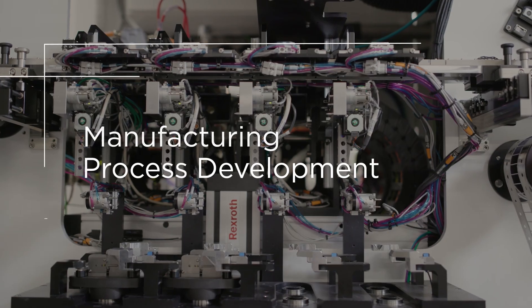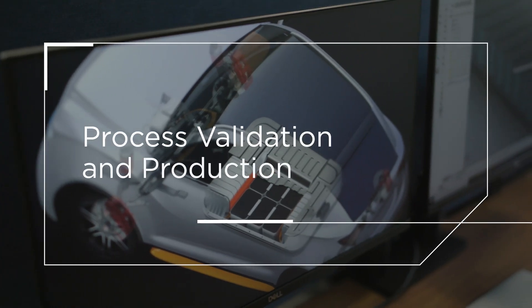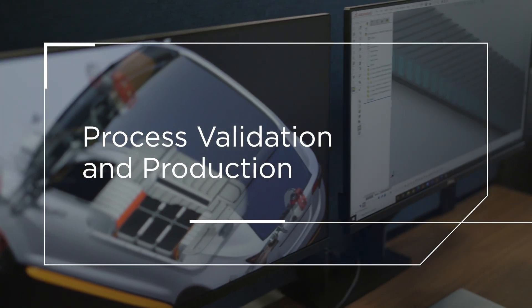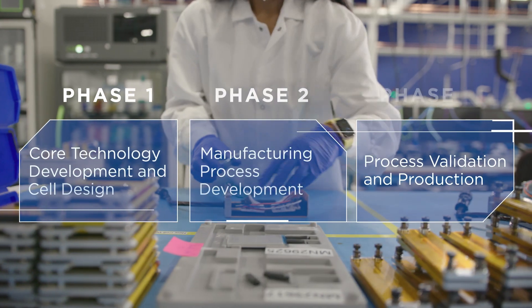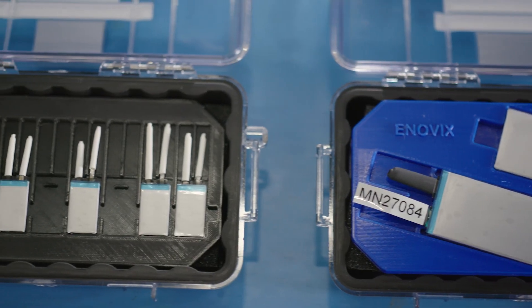This is where most companies fail. Phase 3 is process validation and production. Companies that make it to this phase are poised for commercialization. So how did we do it?